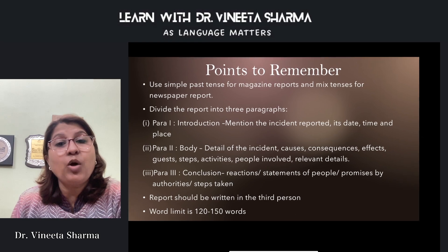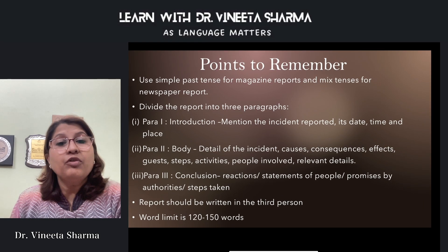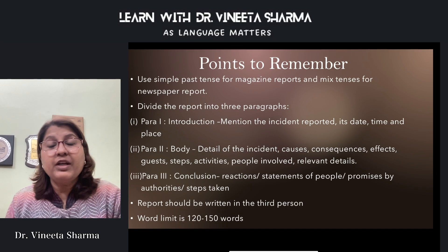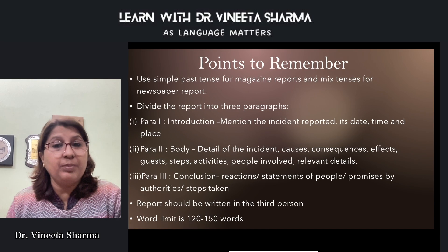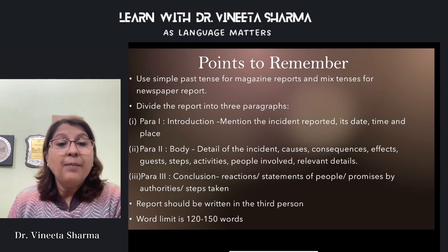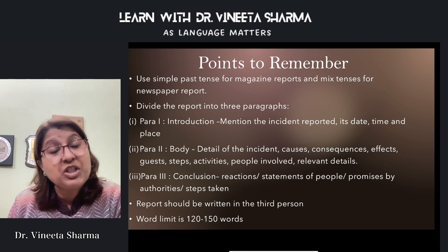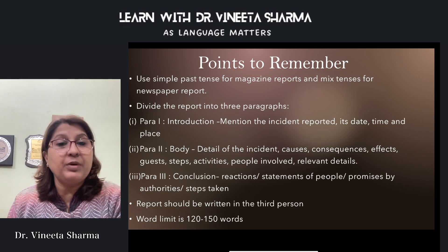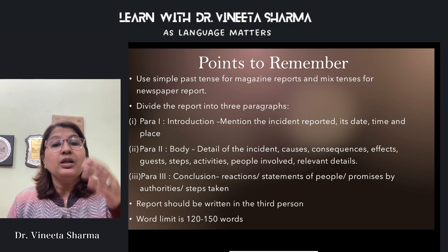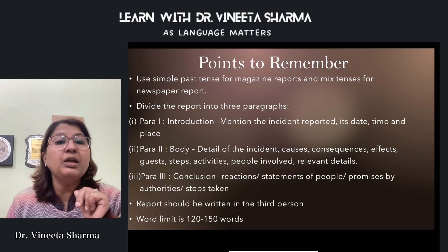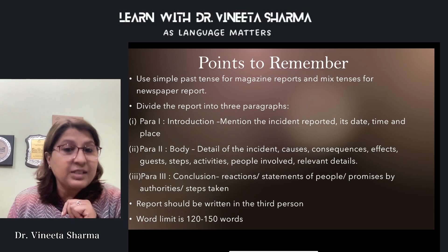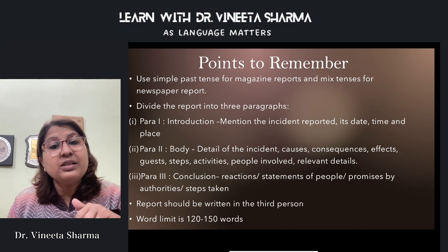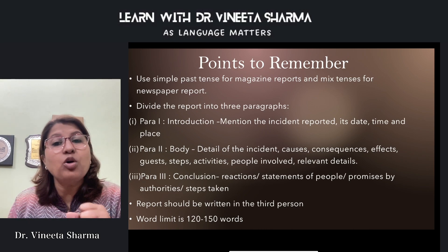Now let's talk about important points to remember when writing a report. Since you are reporting an event that has already taken place, simple past tense must be used. A report is always written in the past tense, especially for a magazine. However, in a newspaper report, mixed tenses are also possible — for example, when quoting an eyewitness in double inverted commas, you may use the present tense.